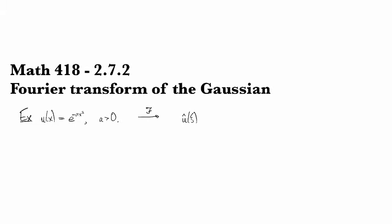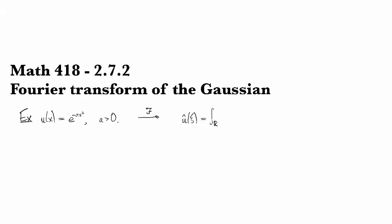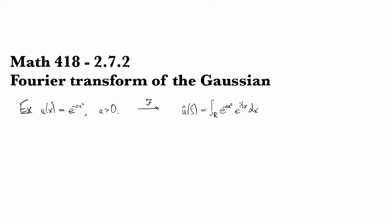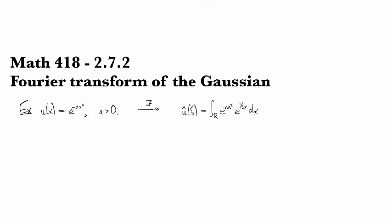So we are going to do this a little bit indirectly. From the definition, we have the Fourier transform of this function is going to be the integral over R of e to the minus ax squared, e to the iξx dx. But instead of trying to compute that explicitly and directly, we're going to do something a little bit different.